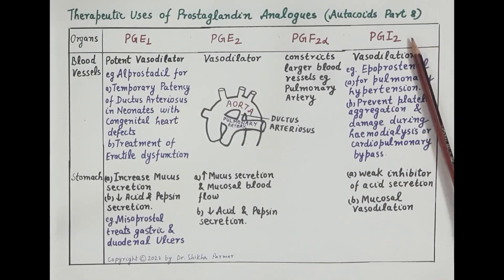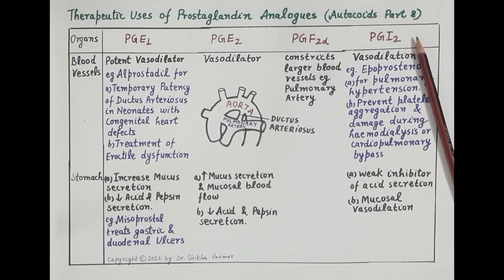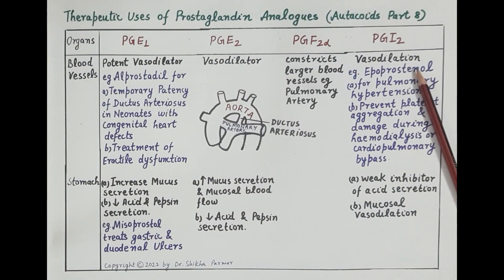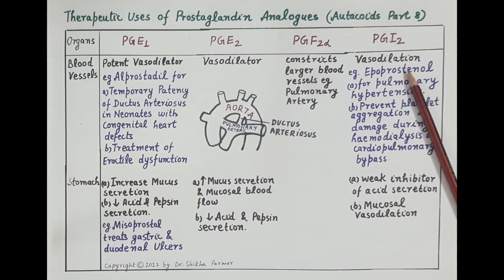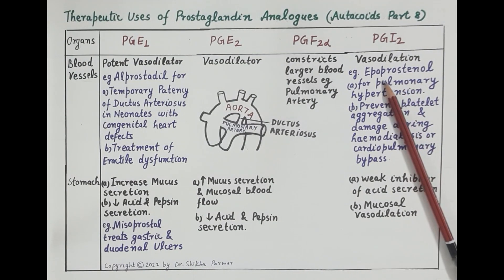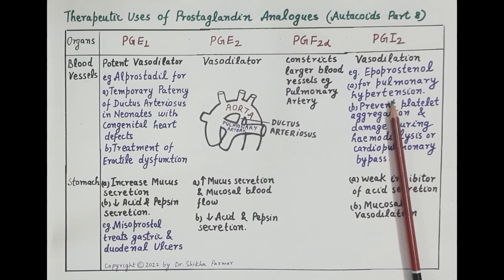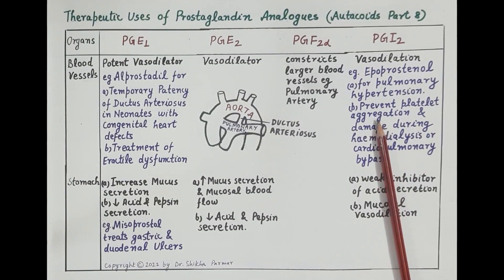Prostacyclin is secreted by vascular endothelium — the innermost lining of blood vessels. Prostacyclin produces vasodilation. Epoprostenol is a synthetic prostacyclin analog; it is a vasodilator that dilates blood vessels, reducing blood pressure, and is used to treat pulmonary hypertension.